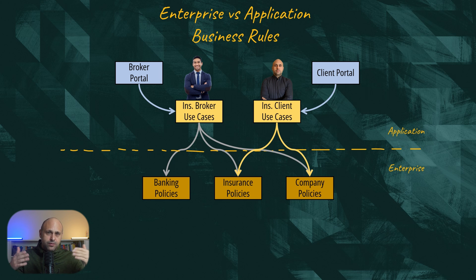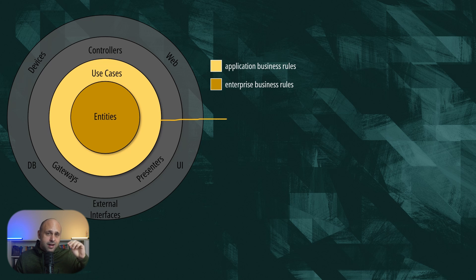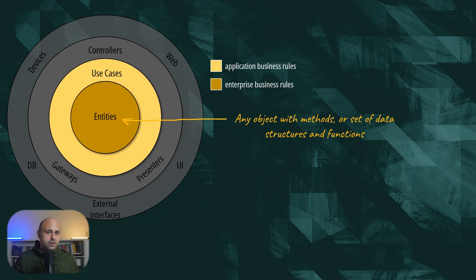The application business rules are more user-centric. They implement the specific use cases that we were tasked to support in our app. Such use cases can orchestrate multiple entities. Uncle Bob uses the term entities in a very loose manner — it's not referring to entities as defined in domain-driven design. An entity can be an object with methods or a set of data structures and functions. If you feel confused by the difference between application and enterprise business rules, don't worry — I'll explain why at the end of the video.